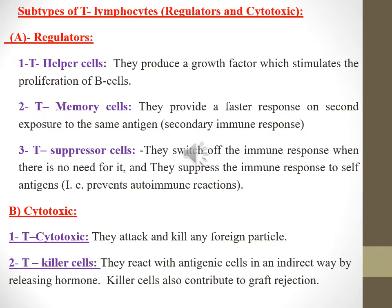T suppressor cells switch off the immune response when there is no need for it and suppress the immune response to self-antigens, thereby preventing autoimmune reactions. The cytotoxic T lymphocytes include T cytotoxic cells, which attack and kill any foreign particle. T killer cells react with antigenic cells in an indirect way by releasing hormones, and also contribute to graft rejection.